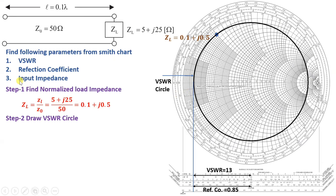Now our goal is to identify input impedance. Input impedance is the impedance measured from the two input terminals. Between the input and the load there is a transmission line of length 0.1 lambda. To calculate input impedance, we move towards the generator, since the generator is connected at the input. Towards the generator means moving in the clockwise direction.